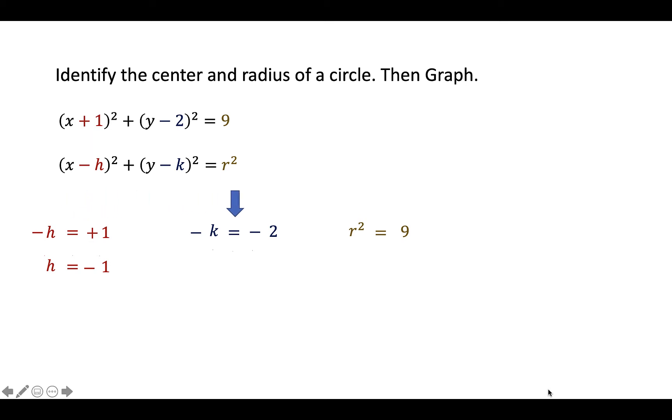For k, we have -k = -2. So divide the equation by -1, you will get k = 2.